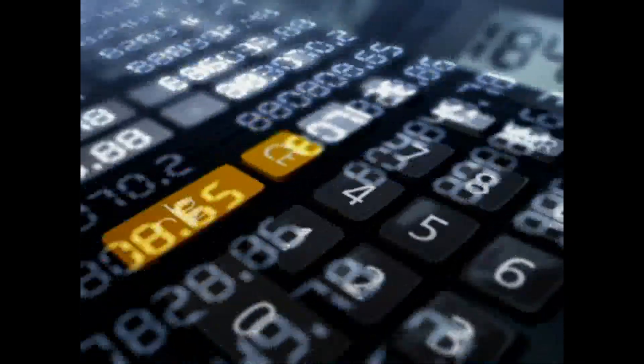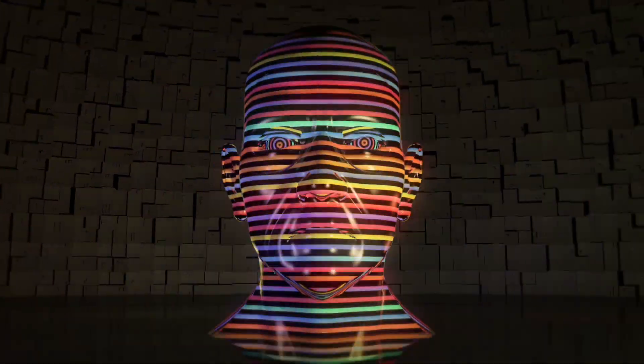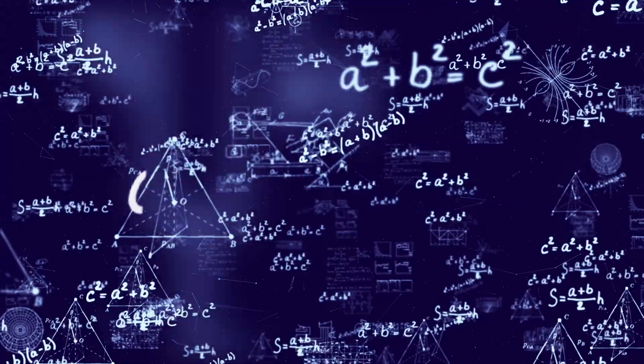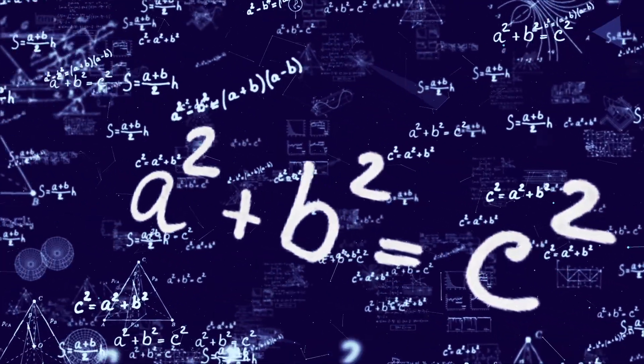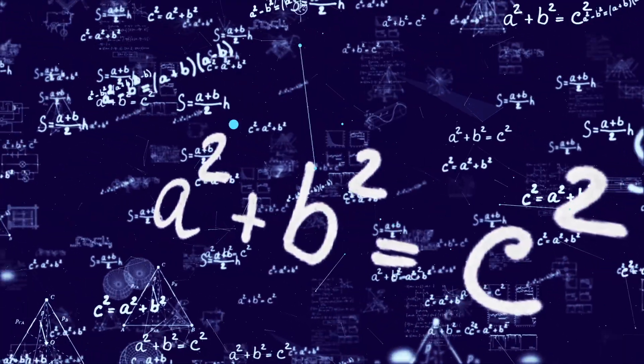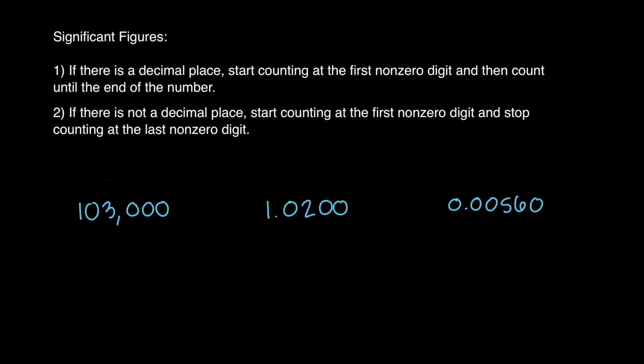Everything you've learned about significant figures is overcomplicated. I'll prove it and replace all those rules with just two. When counting significant figures: if there is a decimal place, start counting at the first non-zero digit and count until the end of the number. If there is not a decimal place, start counting at the first non-zero digit and stop counting at the last non-zero digit.